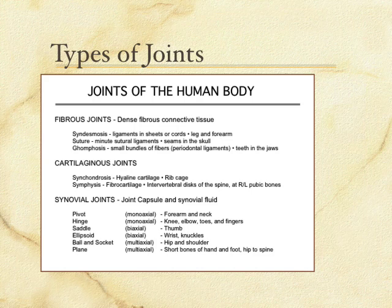So six types: two of them monoaxial, two biaxial, two multi-axial. You could write the questions for me — where do I find a ball and socket joint? Which two joints are multi-axial? All sorts of questions related to those facts. Any last questions about this?